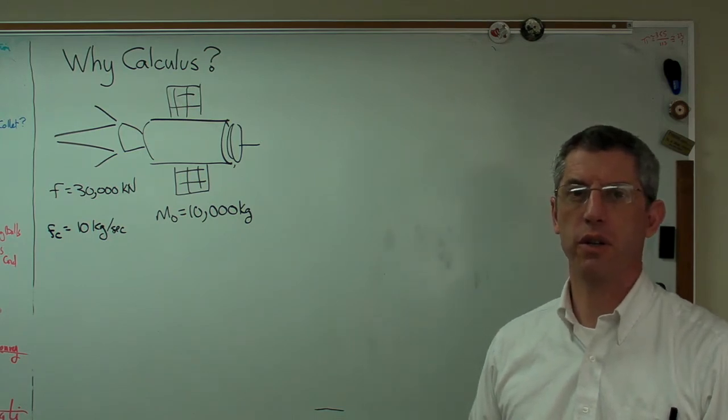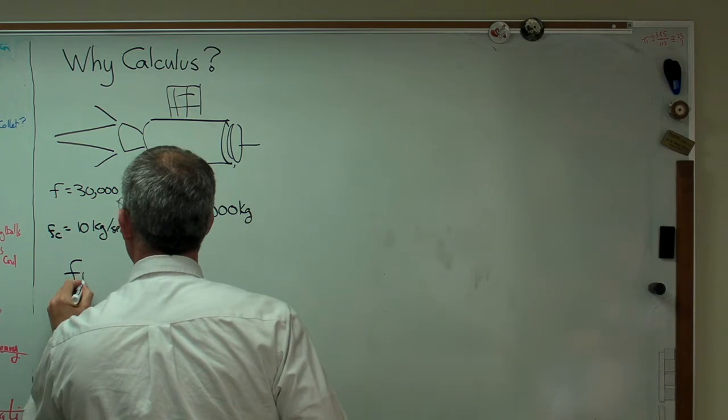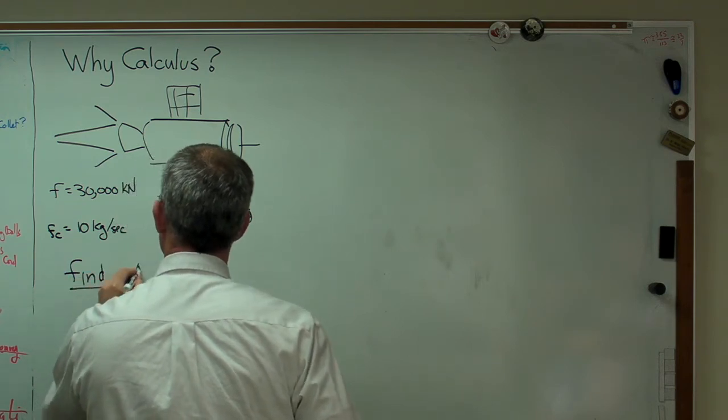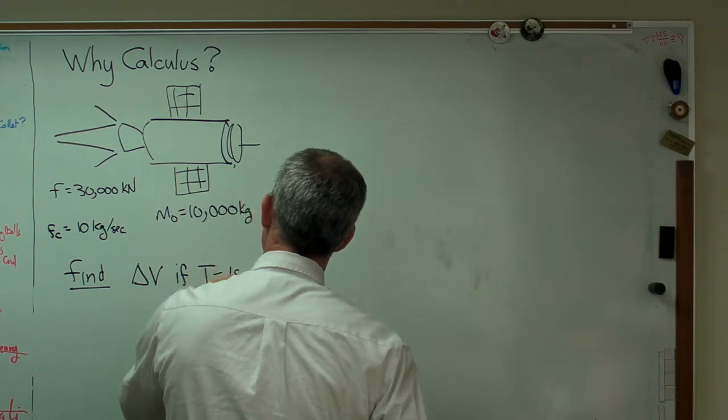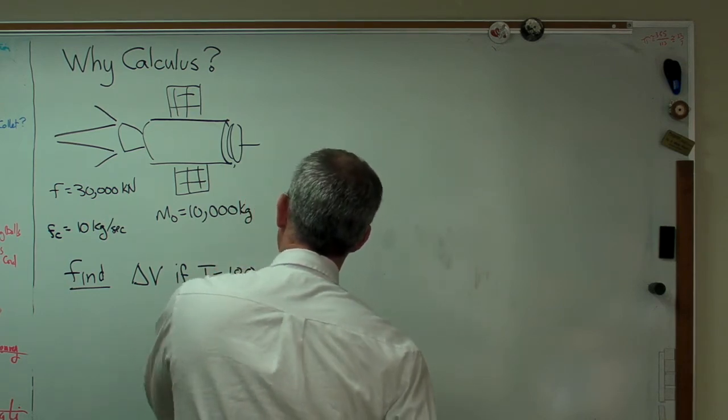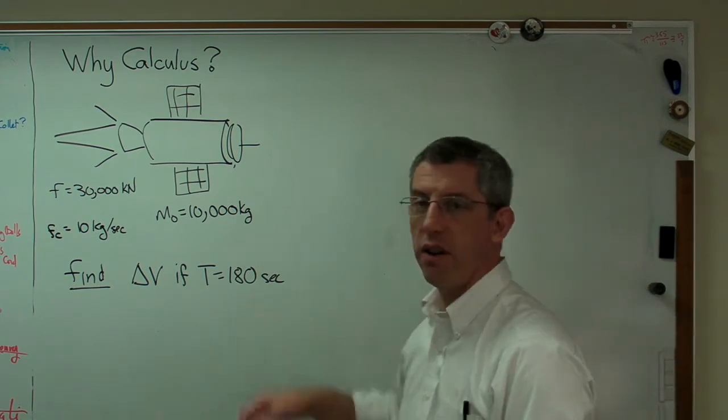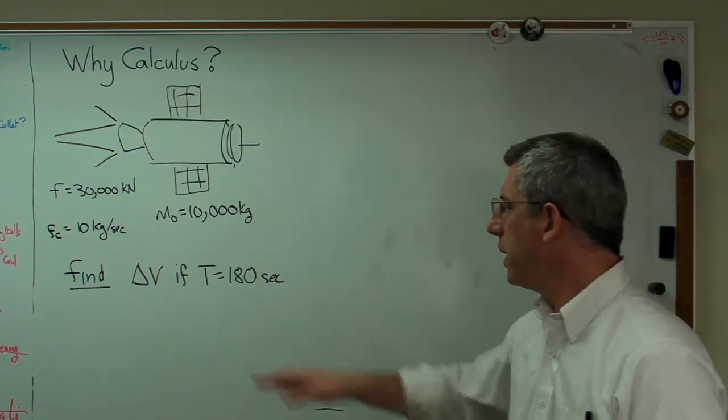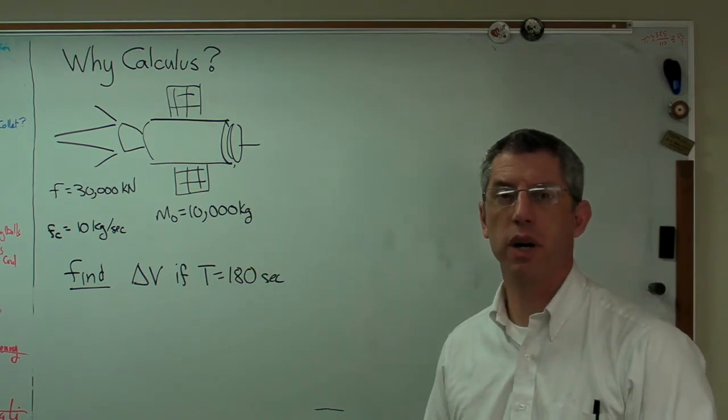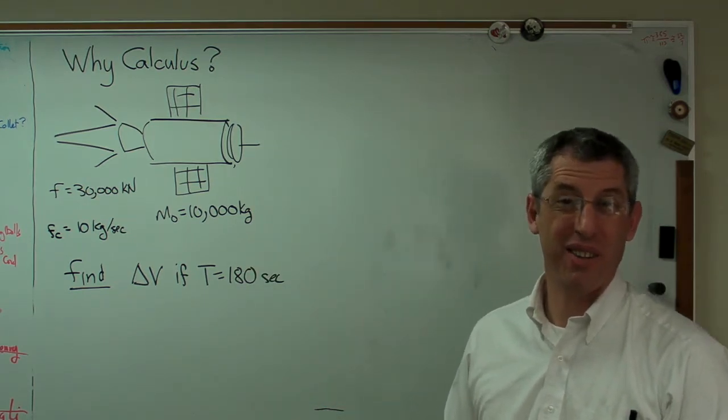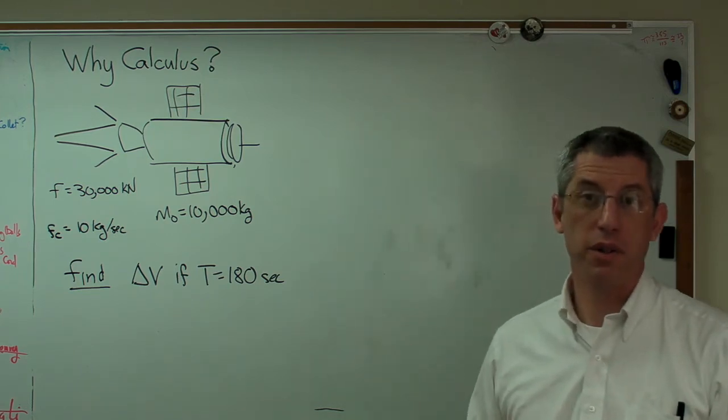This is good enough for what we're trying to do here. We're given all this stuff. Let's find change in velocity if the engine burns for 180 seconds - three minutes. That's a fairly long burn for a rocket engine, but again this is about right. I'm just trying to give you an idea of why calculus is so helpful here.